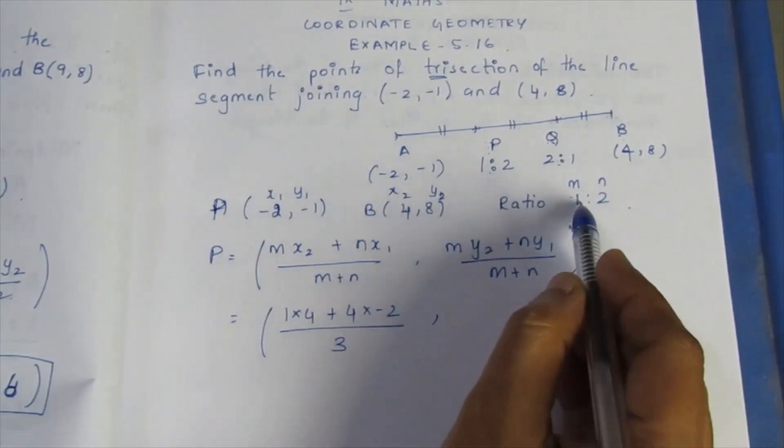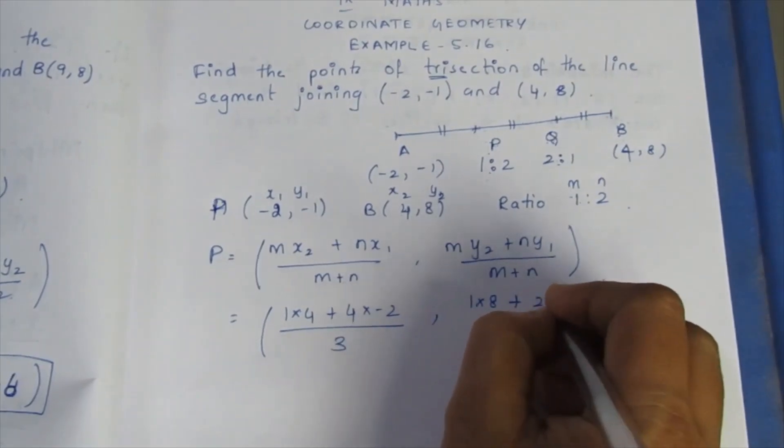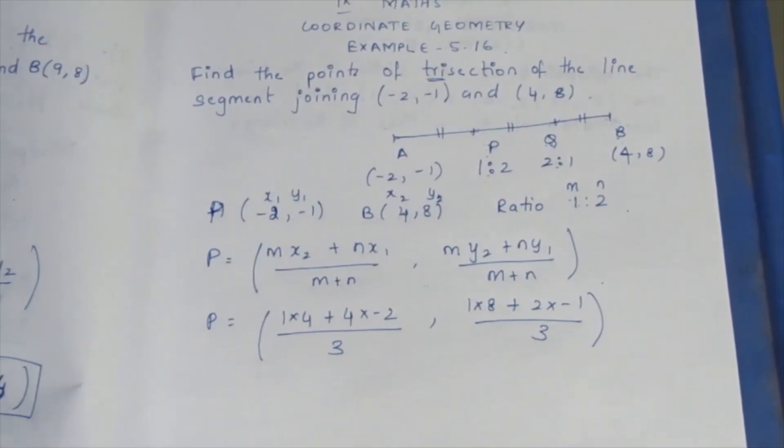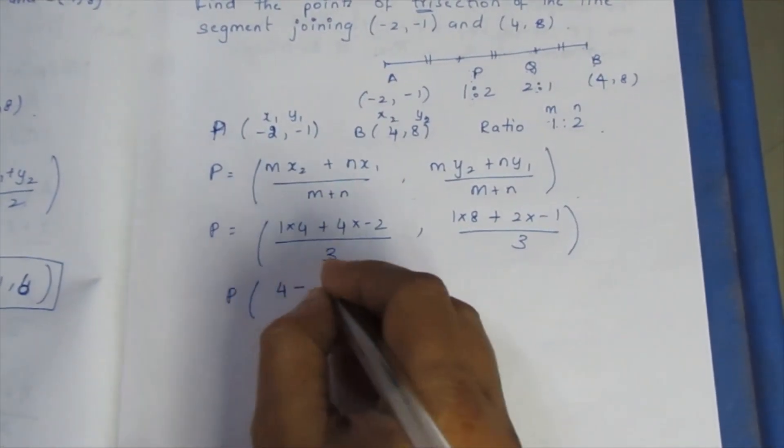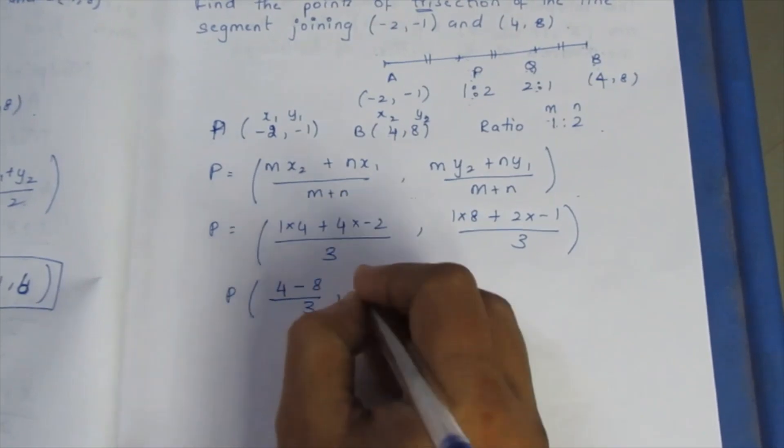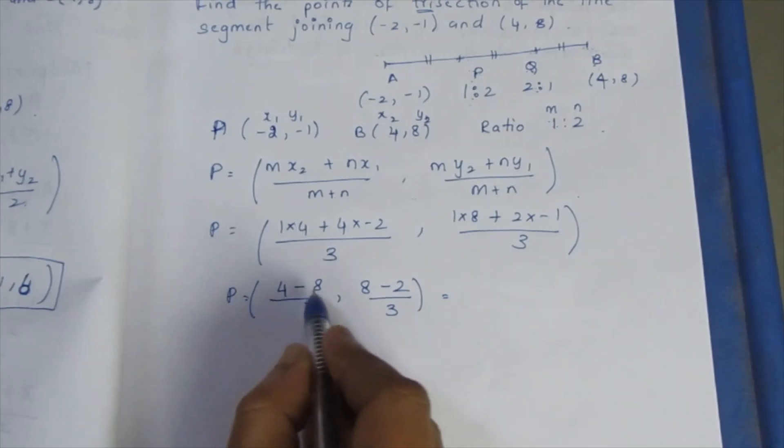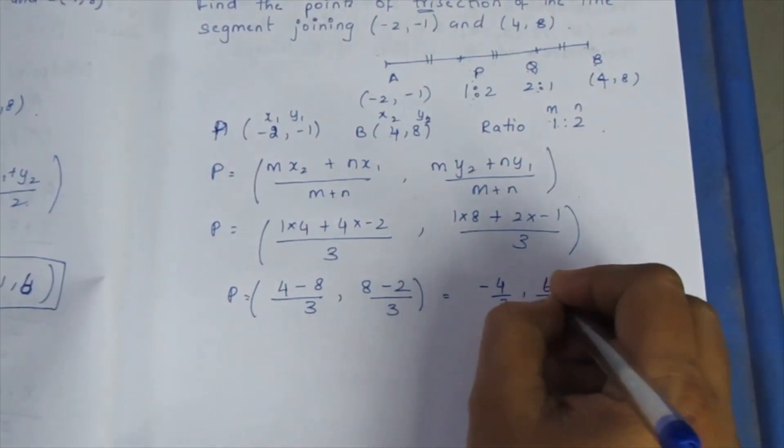1 into 8 plus 2 into (-1) equals 3. P equals: 4 minus 4 by 3, 8 minus 2 by 3. This is the value: minus 4 by 3, 6 by 3.